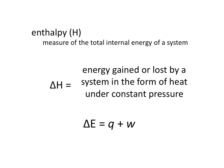Delta H, or a change in enthalpy, is the energy gained or lost by a system in the form of heat under constant pressure. Remember that the energy change, delta E, is equal to Q plus W, with Q being the heat component and W being the work component.